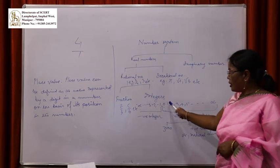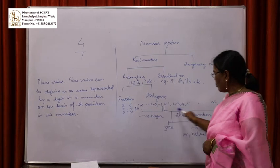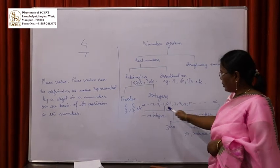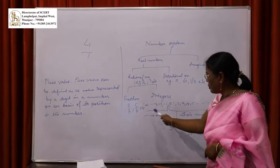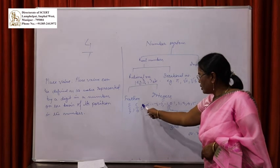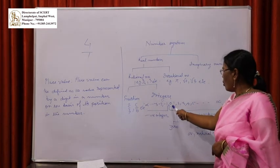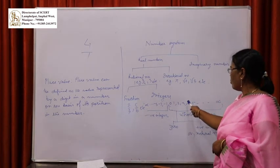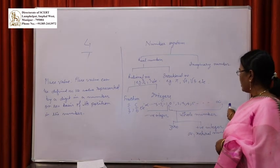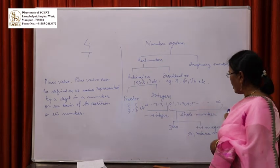The integers include negative integers: minus 1, minus 2, minus 3 up to negative infinity. Then from zero: 0, 1, 2, 3, 4, 5 up to infinity — these are also called the whole numbers.